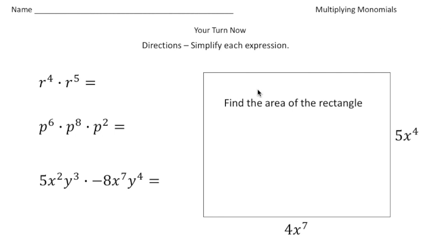So r to the fourth times r to the fifth, that would be r to the ninth. Again, we have the same basis of r, so you need to add exponents. Four plus five gives you nine.